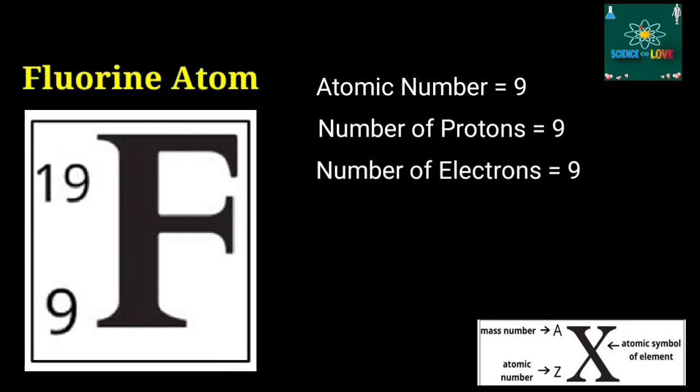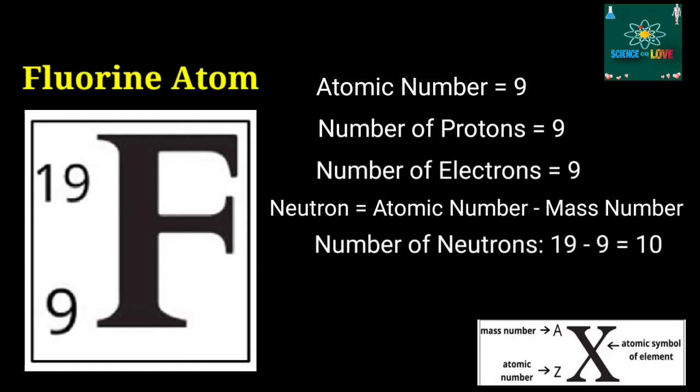How many neutrons does it have? To compute for the number of neutrons, subtract the atomic number from the mass number, 19 minus 9. Therefore, fluorine has 10 neutrons.